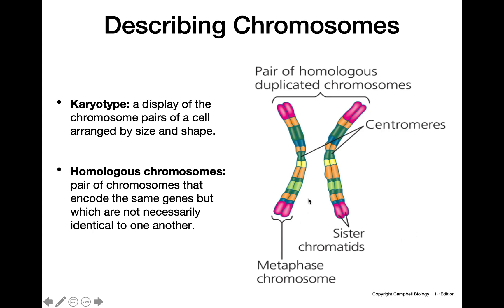The two on the inside or the two on the outside would not be sister chromatids, because they carry the same genes but are not identical — which matches our definition of homologous chromosomes.